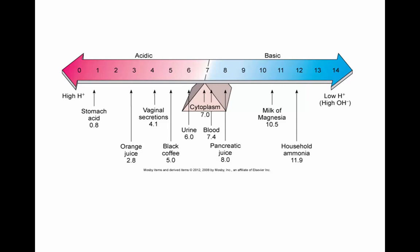The lower the reading, the stronger the acid; the higher the reading, the stronger the base. Stomach acid with a pH reading of 0.8 is a pretty strong acid, while household ammonia with a pH reading of 11.9 is a pretty strong base.